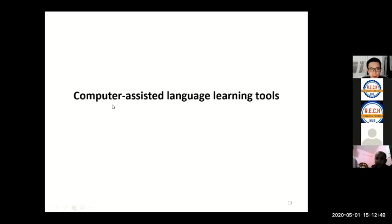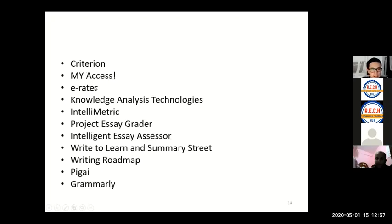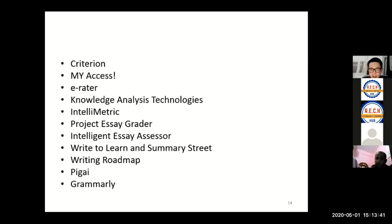Let's take a look at some computer-assisted language learning tools. Criterion, My Access, and E-Rater are probably the most commonly used writing evaluation programs around the world. There is also one constantly used in China that researchers including myself have conducted research on — PGuy. Grammarly is getting more popular in different fields, used for writing emails and also by teachers and students. These are also called automatic writing evaluation programs.